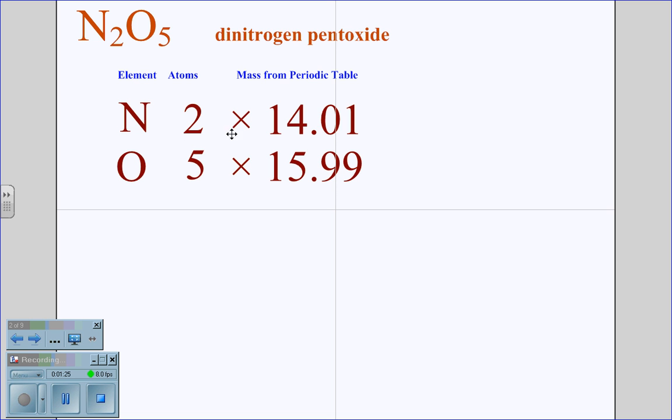Multiplying the atoms, two times 14.01, the atomic mass unit, we get a mass of nitrogen in the molecule of 28.02. And using five atoms of oxygen at 15.99, we get a mass of 79.95.